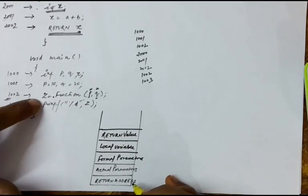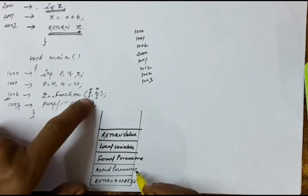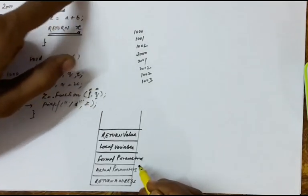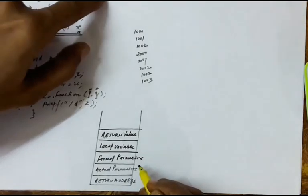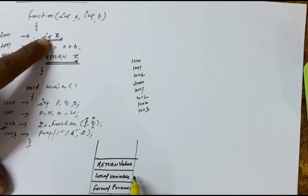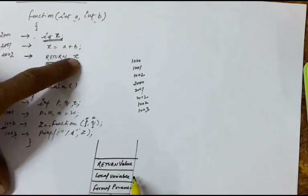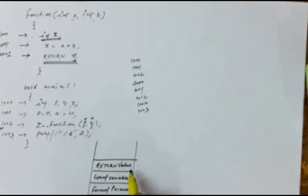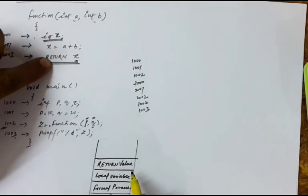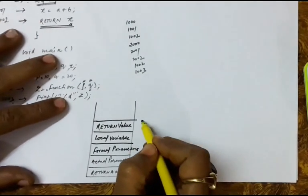These are the five contents stored in an activation record. First is the return address: since we called this function, we should know at what point to come back. Second are the actual parameters — p and q. Third are the formal parameters — the variables a and b in which the values are received. Fourth is the local variable space for x. Fifth is the return value. These are the parameters we need to store in the activation record.